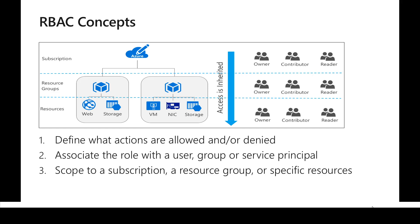If we want interaction between resources, we have to use something called a service account or service principal, and we can assign role-based access control permissions for that service account as well. The scope can be either a management group, a subscription, a resource group, or an individual resource. We have these entities — users, groups, and service principals — and we need to conveniently assign an RBAC rule so that a user or group can have a permission at a particular scope.